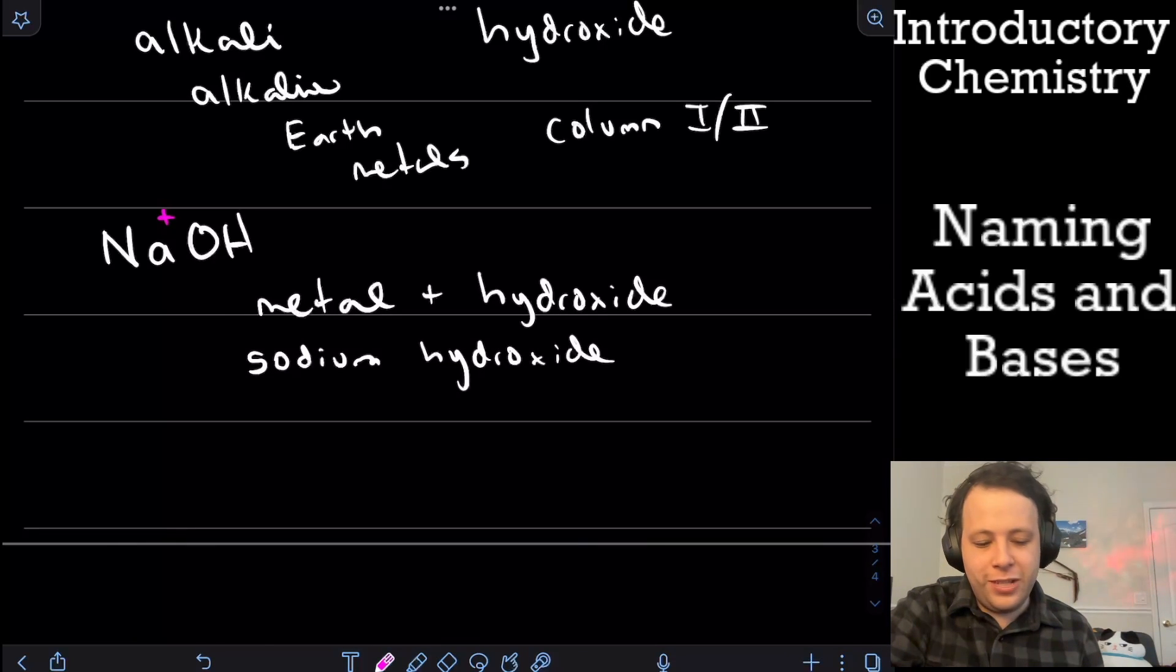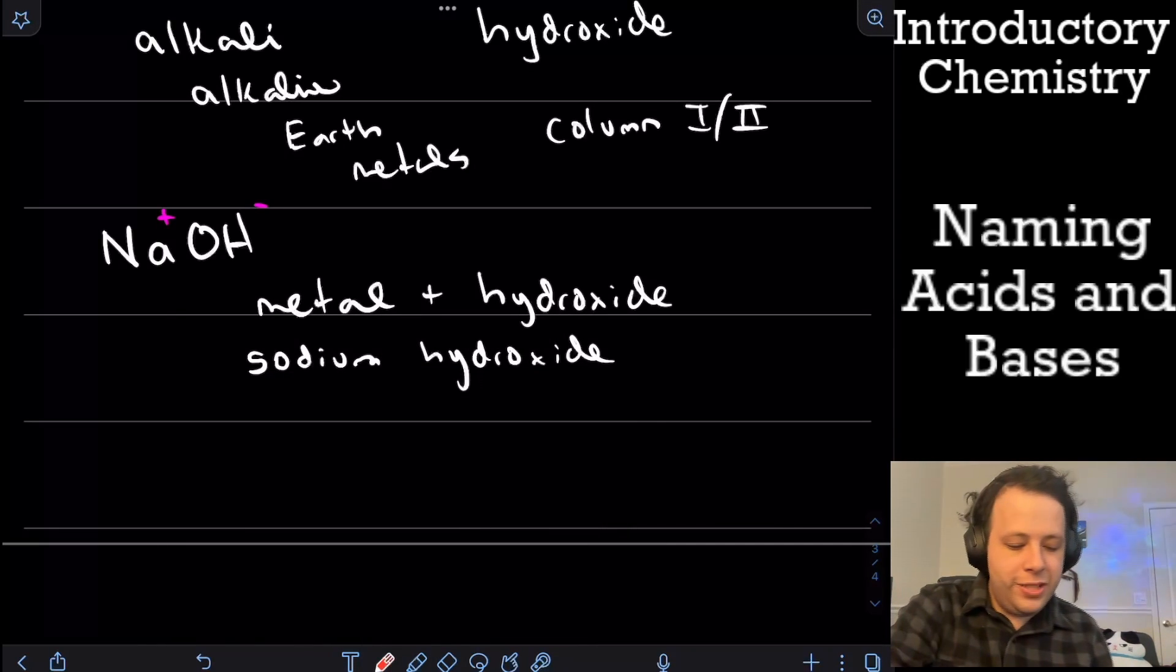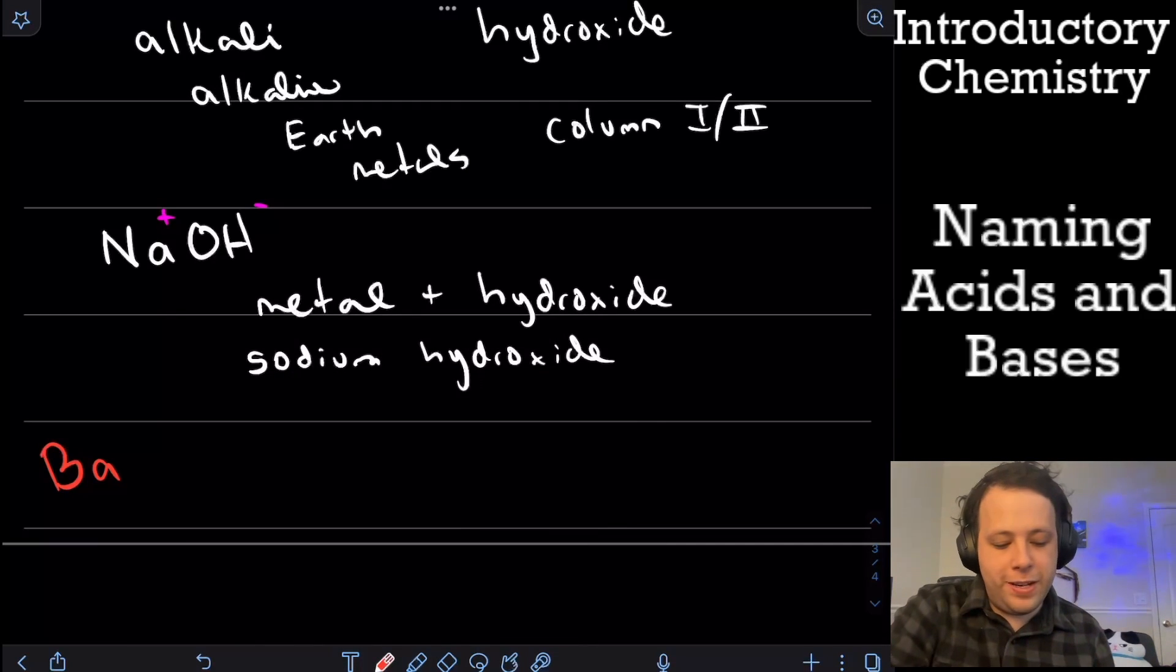So being that we know sodium is a plus one, hydroxide is a negative one. That's not too bad at all. Let's try a different one. What if I gave you barium hydroxide? How would I go and actually end hydroxide? How would I go through naming it?